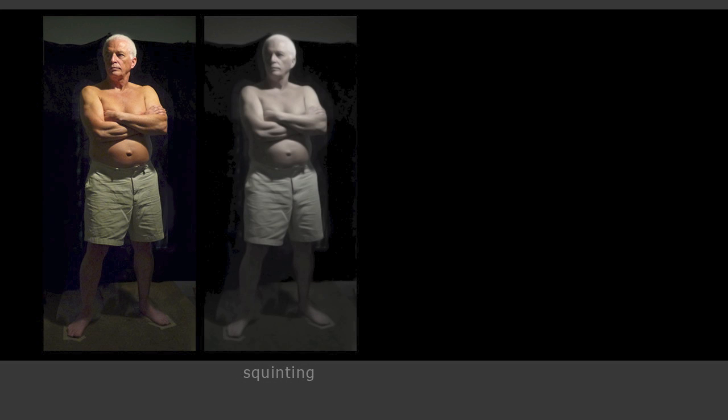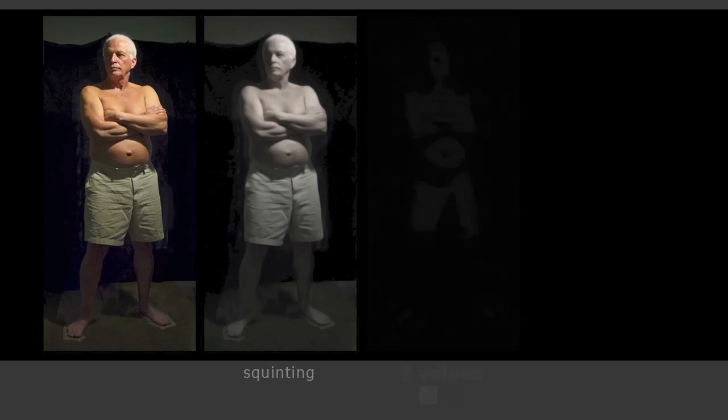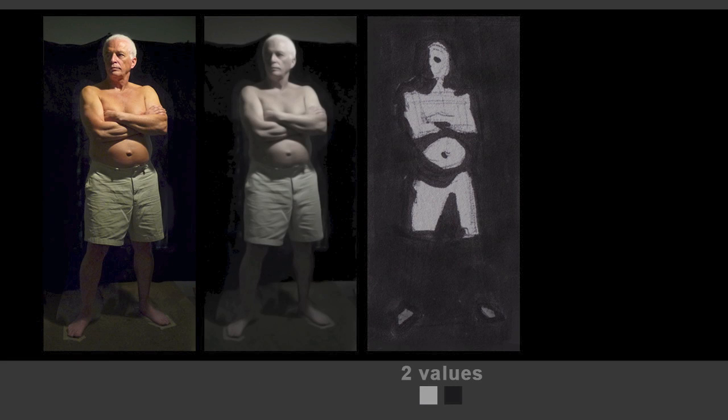To make my first two-value statement — the most simple statement of dark against light — the first thing I did was group all the darks in the background. So basically all the blacks of the curtain, the dark wall, and even the dark floor. I grouped them as one value shape, one black dark value shape.